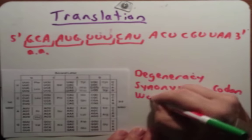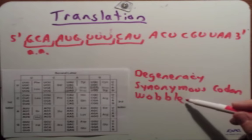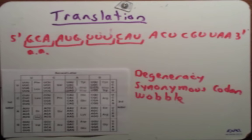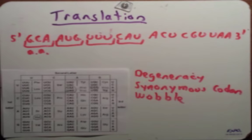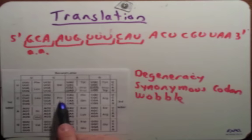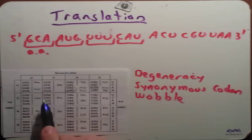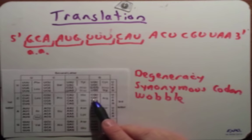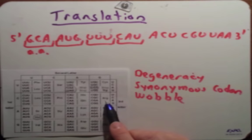Another term we should define is wobble. Wobble explains why we have a degenerate code and why synonymous codons can code for the same amino acids. If you notice, most of the time when we have multiple codons coding for the same amino acid, it's that third position that changes. For proline, as long as the first two are C-C, it doesn't matter what that third position is — it's always going to make proline. Same with arginine: as long as you have C-G, it makes arginine regardless. So we say this third base has a wobble effect.